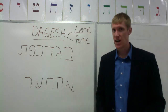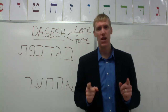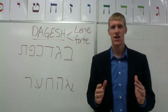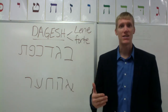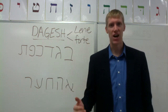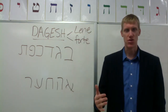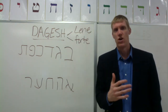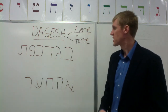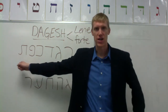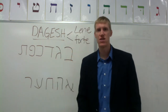The dagesh lene can only appear in six letters, six different consonants. And those consonants are referred to with an acronym: begad kefat. Begad kefat. You'll want to remember that nonsensical word because it represents these six letters, and it's just a way of vocalizing the sounds of each of the six letters.